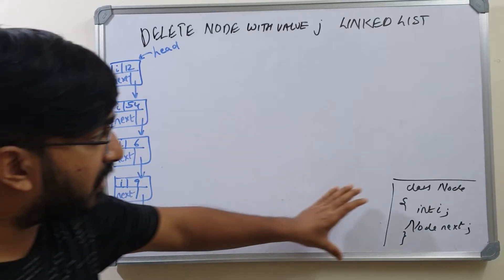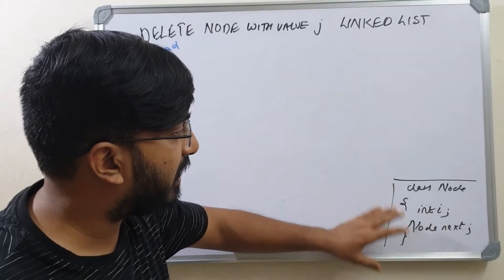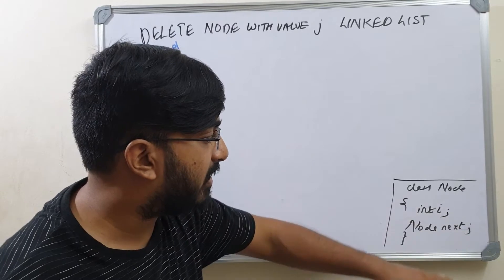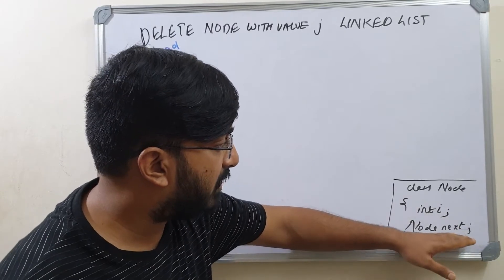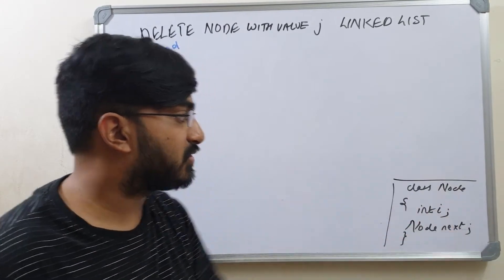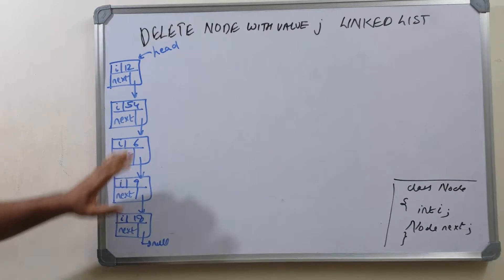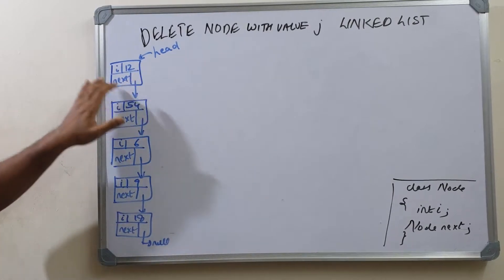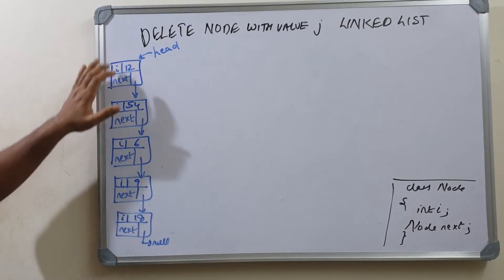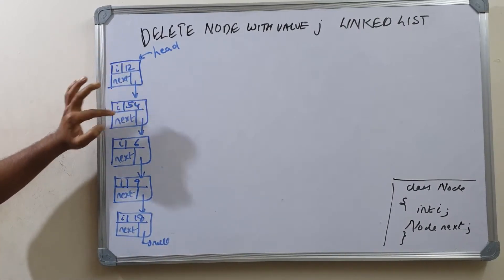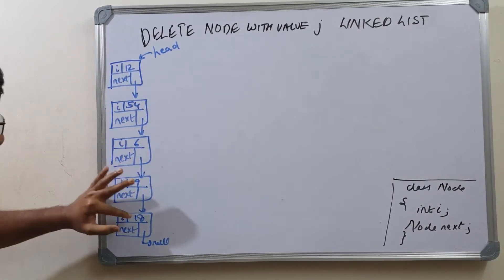This is the class node we are using, and it has integer i as the data. It has a variable next of type node that stores the link to the next node. This is the linked list we are using. The head is pointing to the head of the linked list. We have 12, 54, 6, 9, 18.